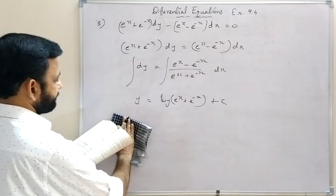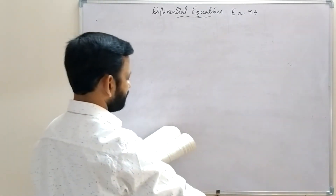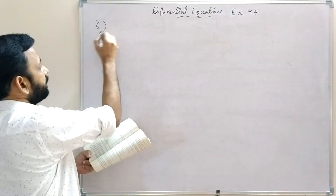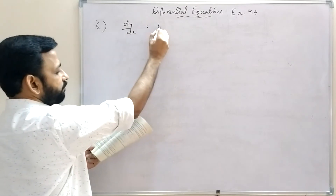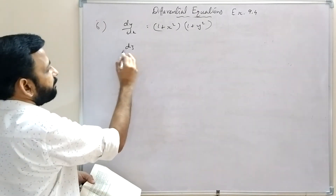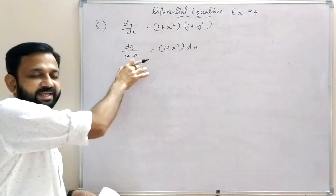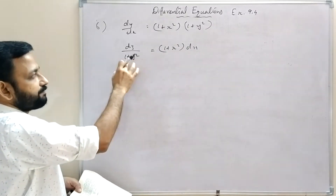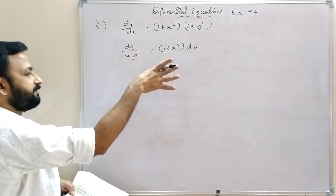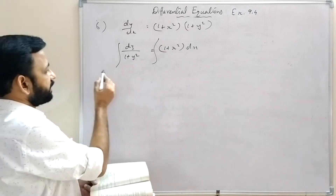Question 6: dy/dx = (1 + x²)(1 + y²). Separating: dy/(1 + y²) = (1 + x²) dx. The integral of 1/(1 + y²) is tan⁻¹(y), so we can integrate directly.